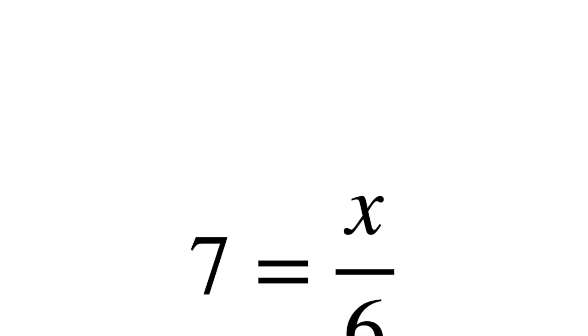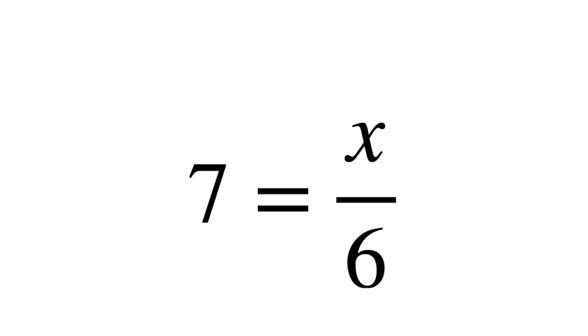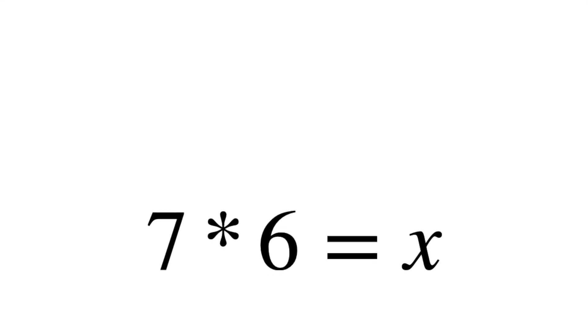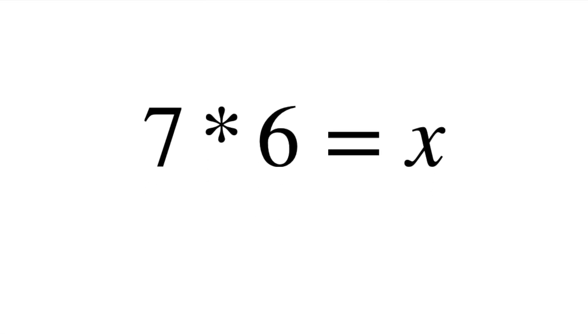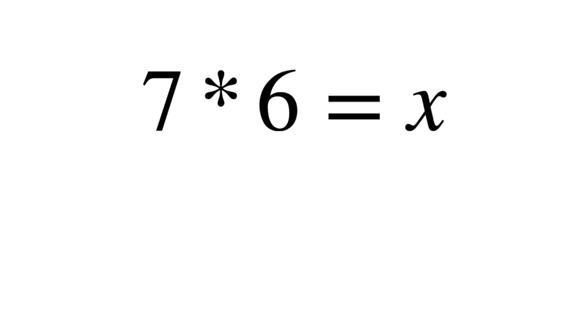Just like the first equation is harder to solve — 7 equals x over 6 — this melody is harder to hear. Move the equations around and you have the two numbers on one side, x on the other. Move the melody around and you have the melody up top where you can hear it.